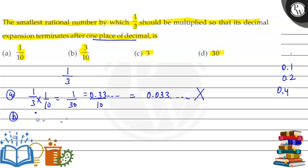Next, the second part: 1/3 into 3/10. Cancel, so this is 1/10. This is 0.1. This is 1 decimal.